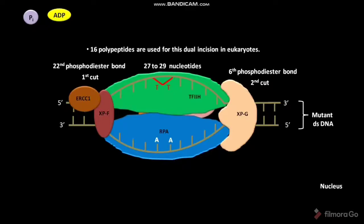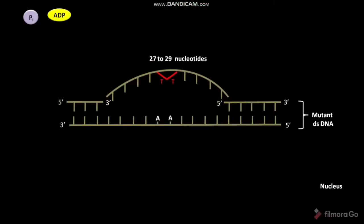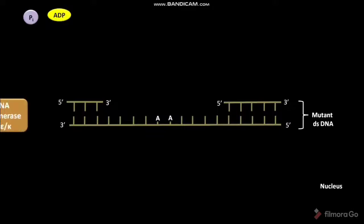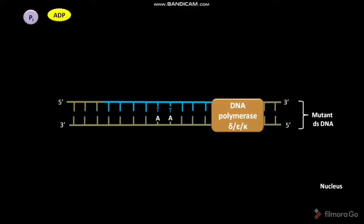After the dual incision, the whole enzyme complex and the oligonucleotide containing 27 to 29 nucleotides are released from the DNA duplex. The gap in the mutant double-stranded DNA is then filled by DNA polymerase delta, epsilon, or kappa. DNA polymerase epsilon is used in the replicating cell to fill the gap.